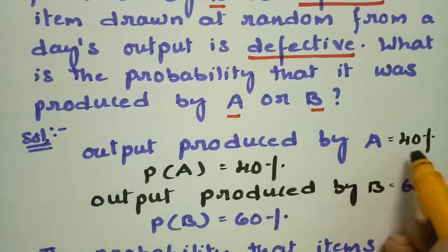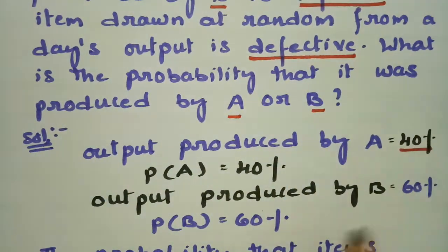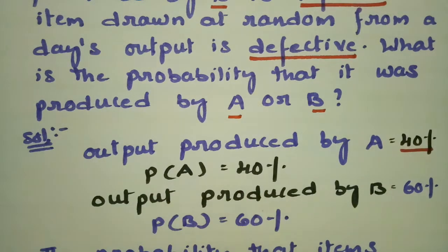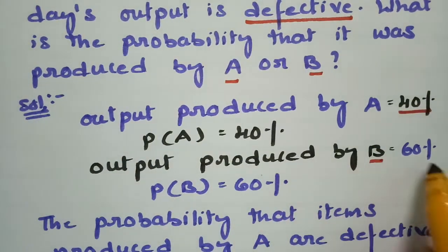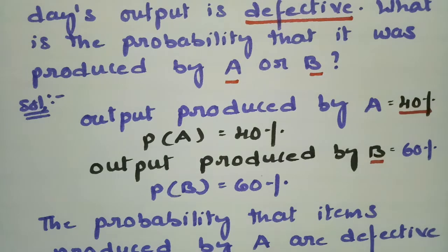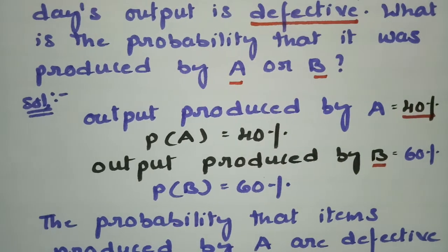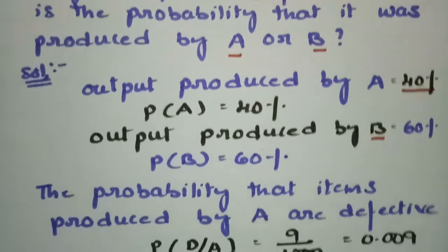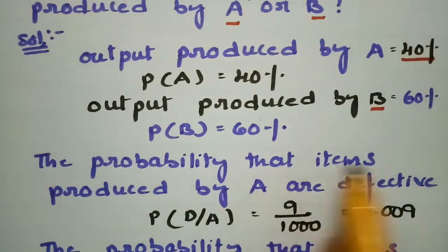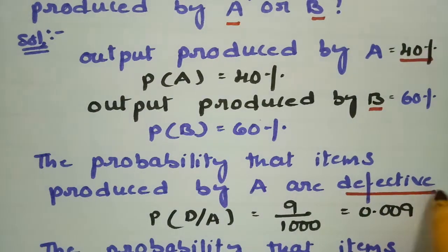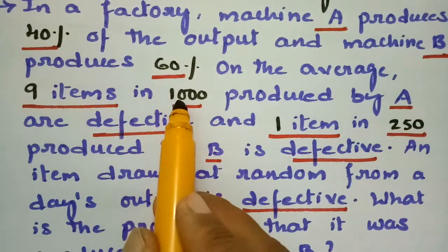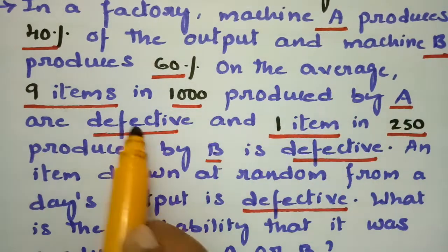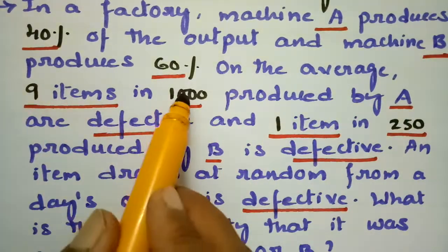The output produced by machine A is 40 percent, that is P(A) = 40 percent, and the output produced by machine B is 60 percent, that is P(B) = 60 percent. The probability that items produced by A are defective is 9 by 1000.